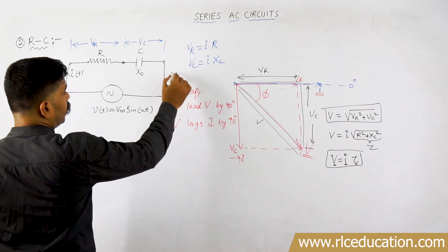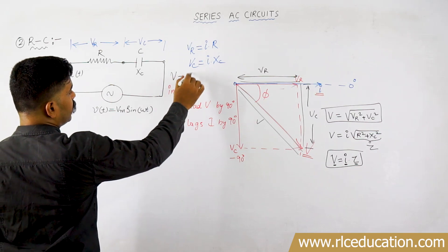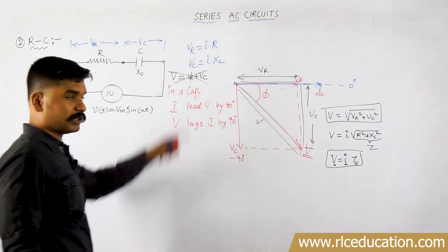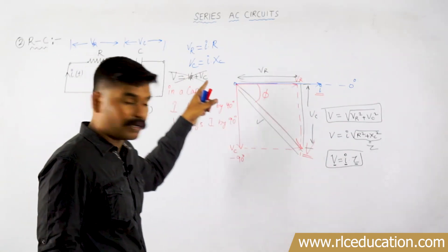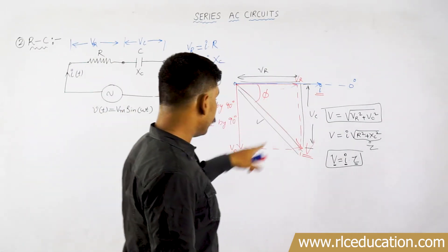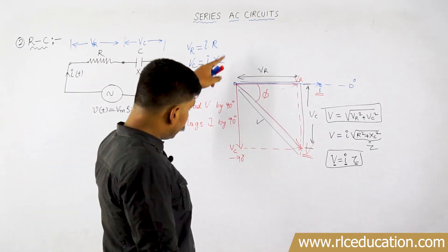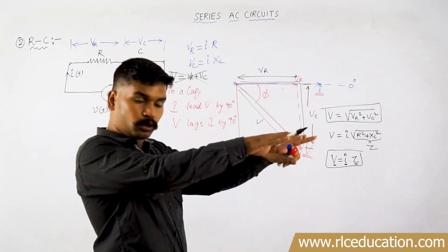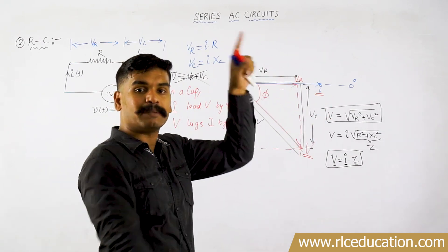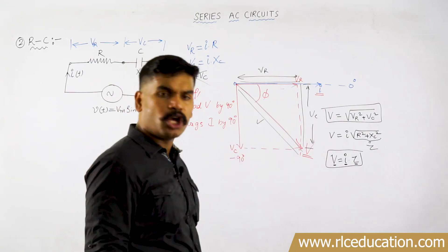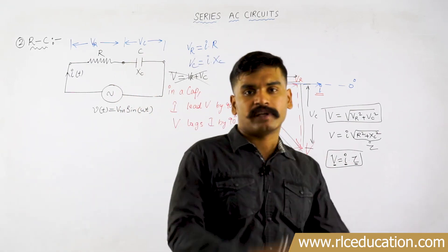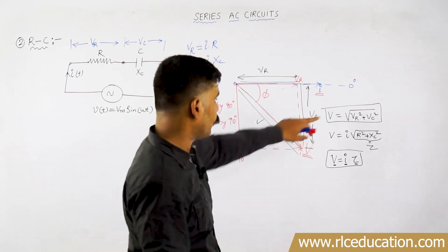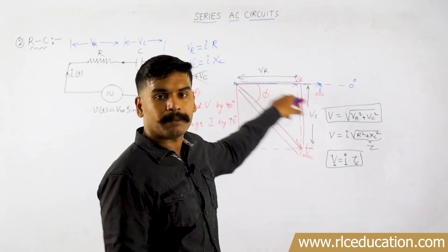Do not apply KVL and write V = Vr + Vc directly — that is absolutely wrong. Why? Because the Vr and Vc vectors are displaced by some angle. When two quantities are displaced by some angle, you cannot add them algebraically. You have to do vector addition, which is done by the Pythagorean theorem.